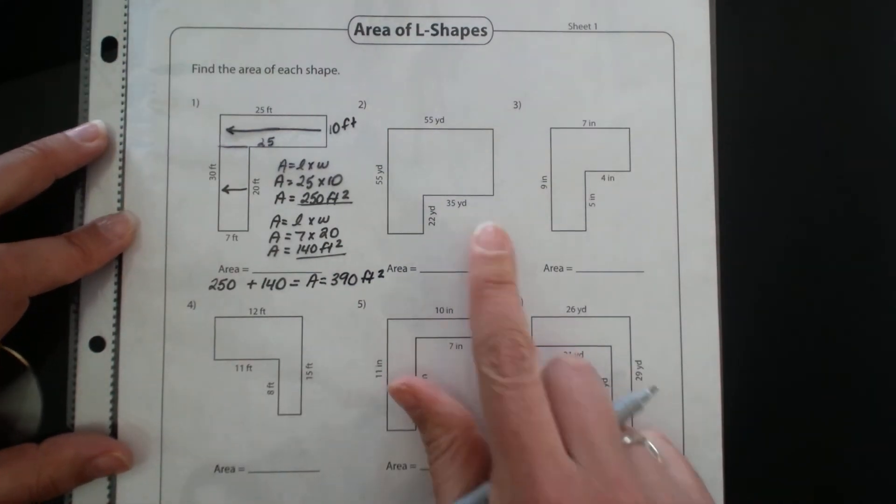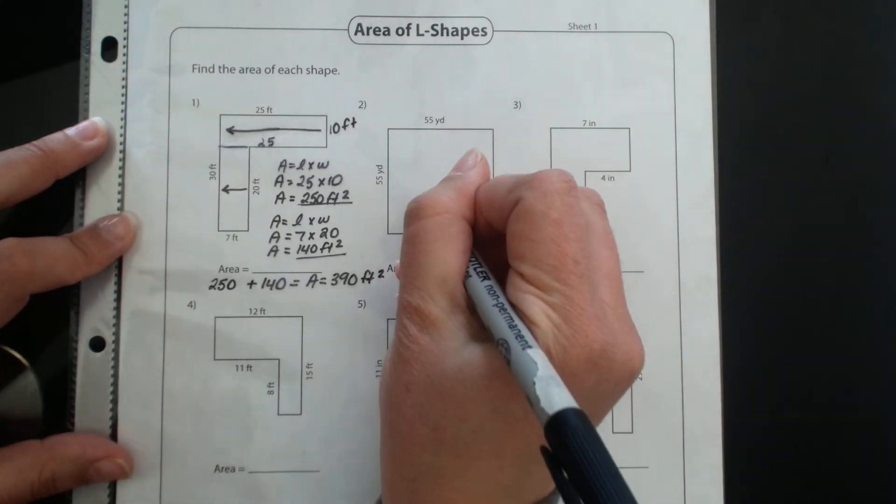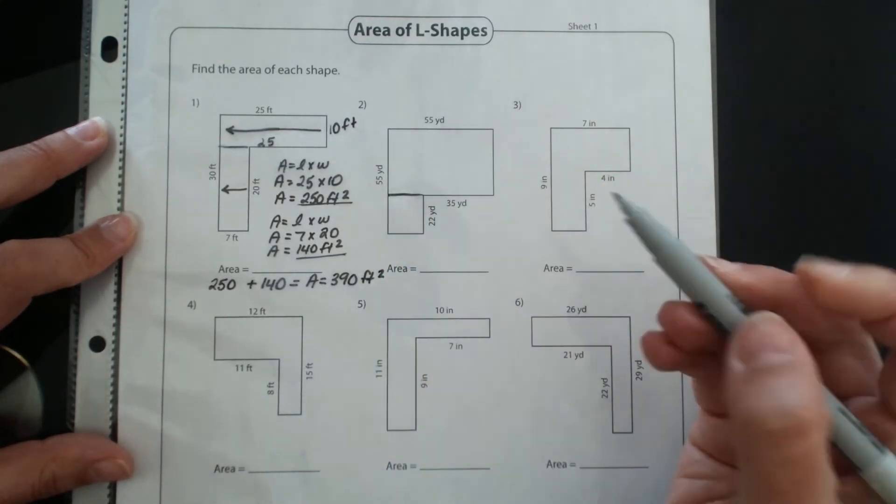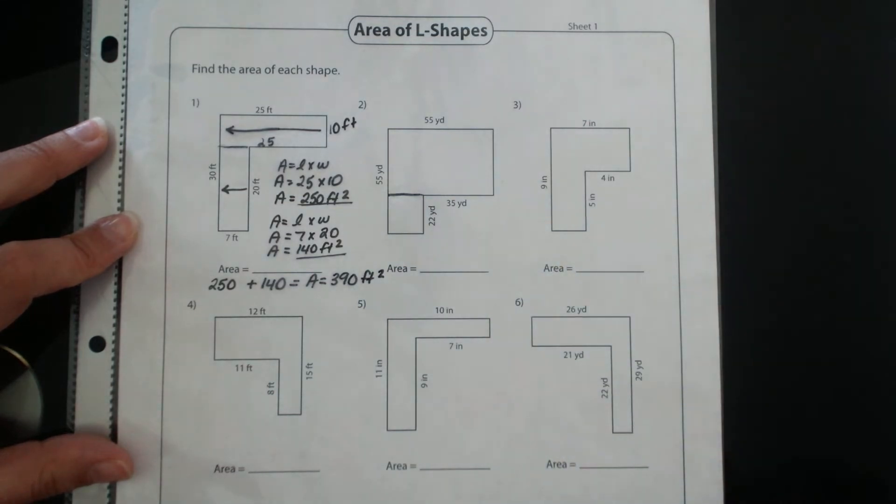All right, if I look over to number two here, so again I'm looking at this irregular shape and I'm trying to pick out if I can find any rectangles or squares that I can break it up into. So I'm going to draw a line here and I'm going to first calculate the top rectangle and then I'll calculate the bottom.